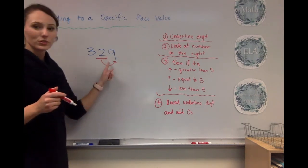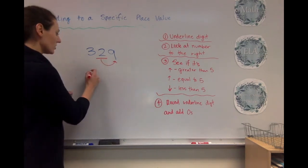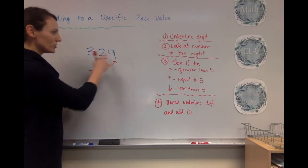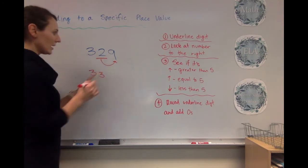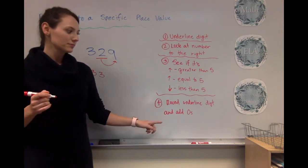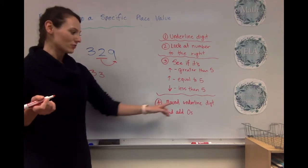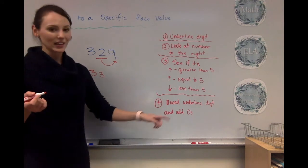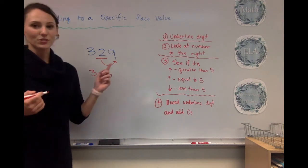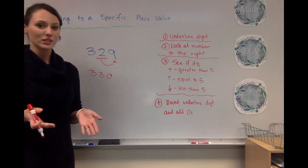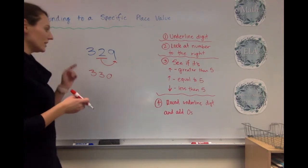So five or more, let it soar. So that means I'm going to round up. So I'm going to change this two to a three because I'm rounding it up. And then I'm going to replace this number with a zero. I'm going to round the underlined digit, which we just did, and add zeros. So 329 rounded to the tens place is 330.